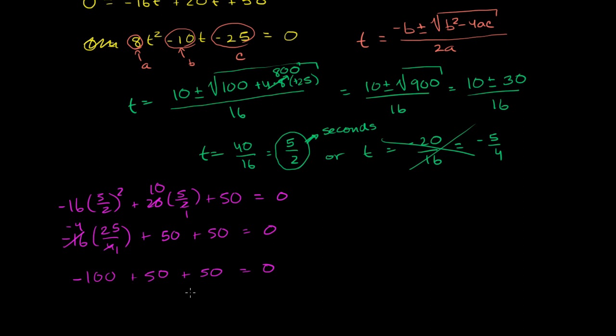We get 0 equals 0, and it all checks out. We hit the ground after 5 halves seconds. Or another way to think about it is 2.5 seconds. t is equal to 5 halves seconds or 2.5 seconds.